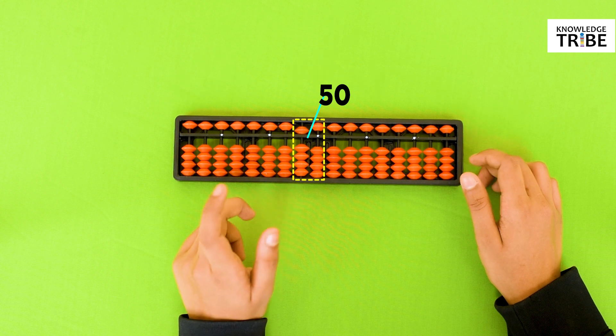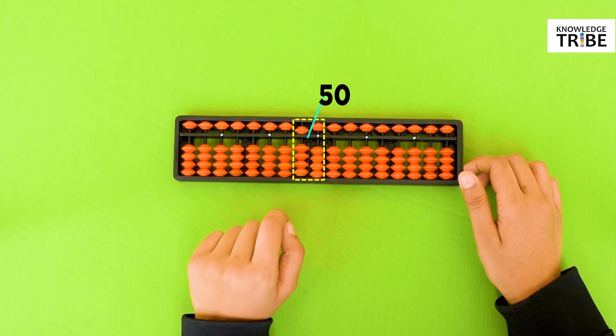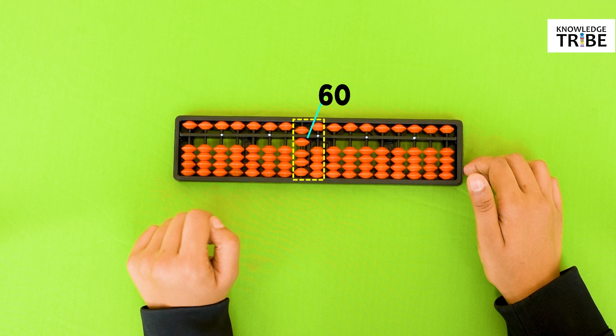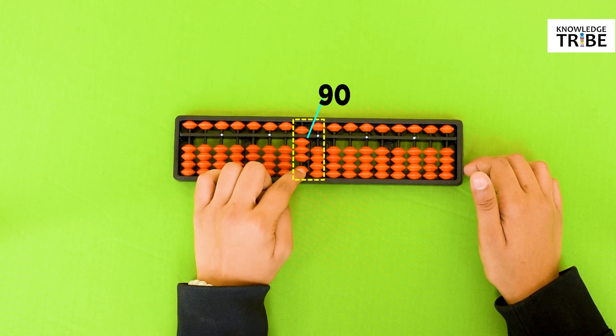Now tell me about 60. We can write 60 by moving 1 earthly bead towards the center beam. This can go up till 90. 70, 80, 90.